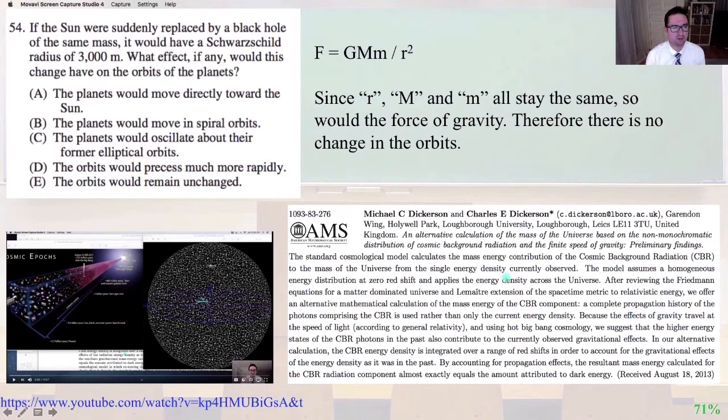Problem number 54. If the sun were suddenly replaced by a black hole of the same mass, it would have a Schwarzschild radius of 3000 meters. What effect, if any, would this change have on the orbits of the planets? It's my favorite problem in this exam. So the force of gravity equals GMm over R squared, where R is the distance from the planet to the center of mass of the black hole or the sun. Since R, that distance to the center of mass of the black hole or the sun doesn't change and neither do either of the masses, they all stay the same. So the force of gravity, there's no change in the orbits. And so that would be answer E.